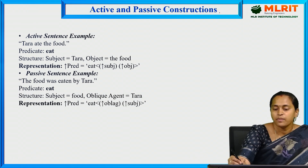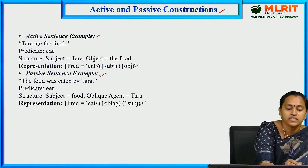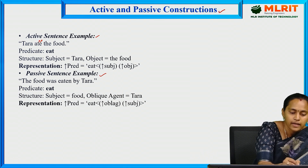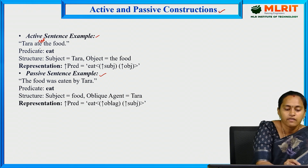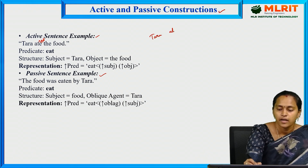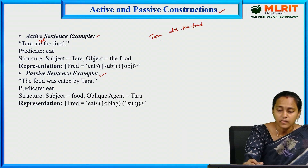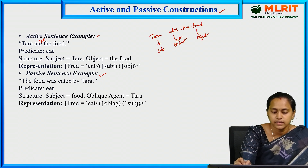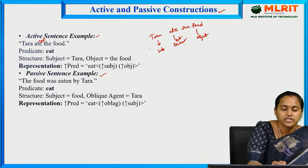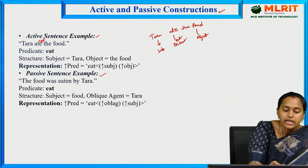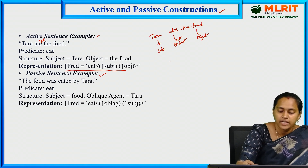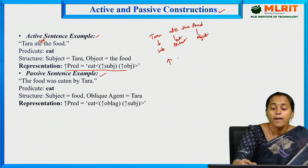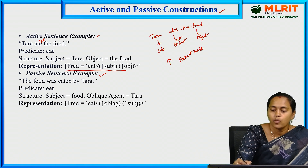In lexical functional grammar, active and passive constructions are represented differently. For the active sentence 'Tara ate the food': 'Tara' is the subject, 'eat' is the predicate, and 'food' is the object. The F-structure is represented with predicate equal to eat, subject, and object, where the up-arrow defines the F-structure of the parent node.